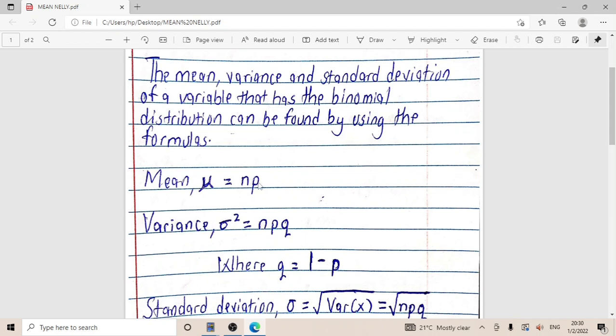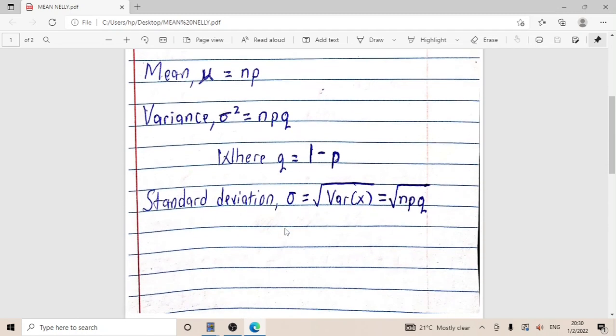Variance is represented as sigma squared, which is equal to npq, where q is the probability of failure, whereby the probability of failure is equal to 1 minus p. Standard deviation is equal to the square root of variance, which is the square root of npq.